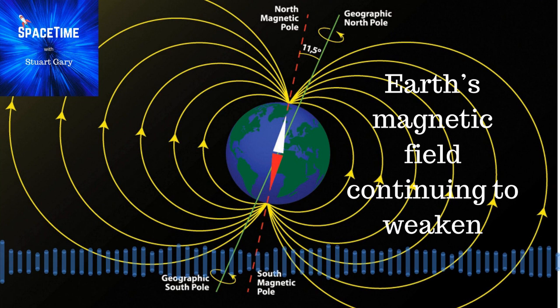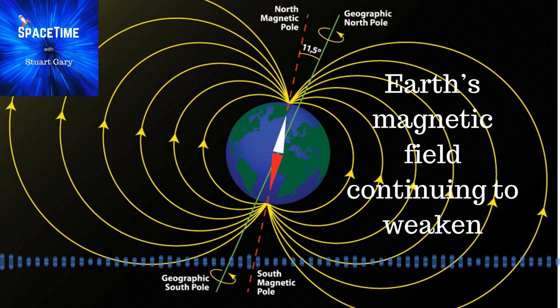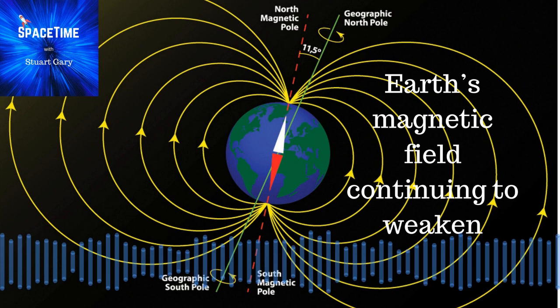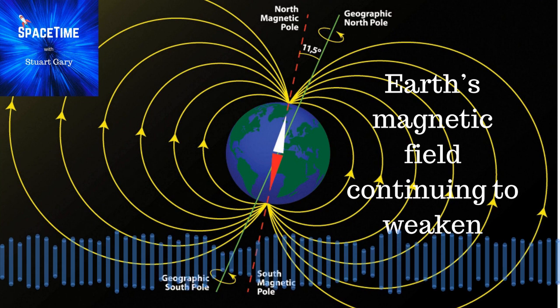It's been speculated that the current weakening of the field could be a sign that Earth's heading for an imminent polar reversal, in which the North and South magnetic poles switch places. The Sun goes through polar reversals just like this every 11 years. And similar polarity reversals have occurred on numerous occasions throughout Earth's history, roughly every 250,000 years or so.